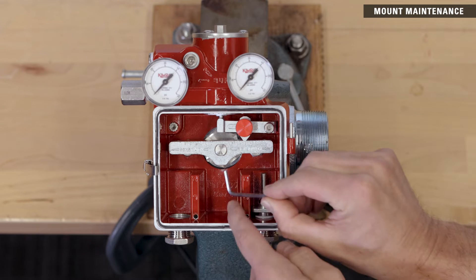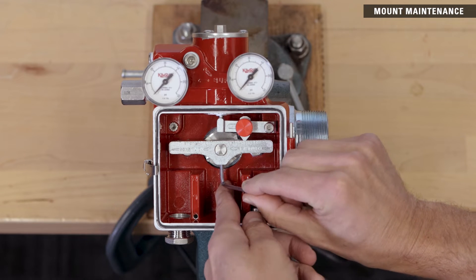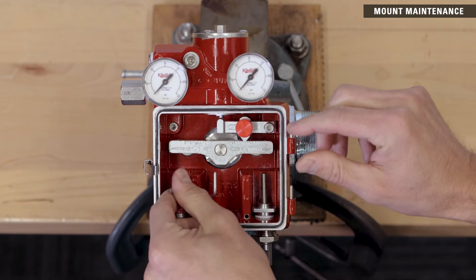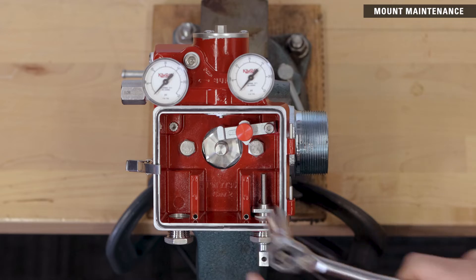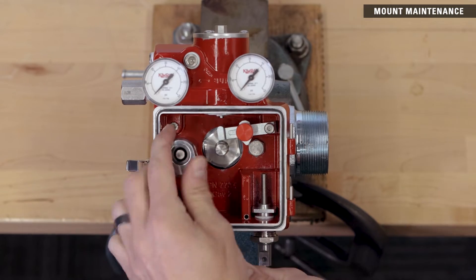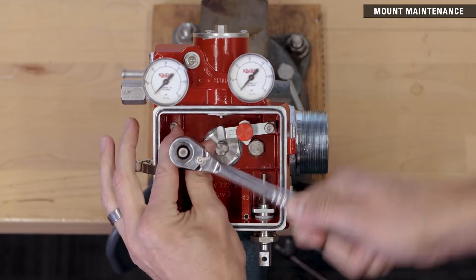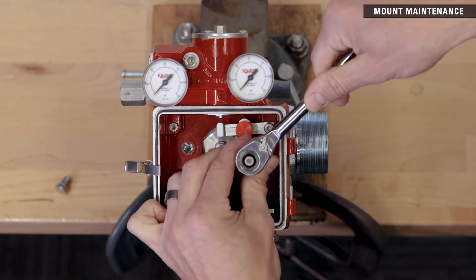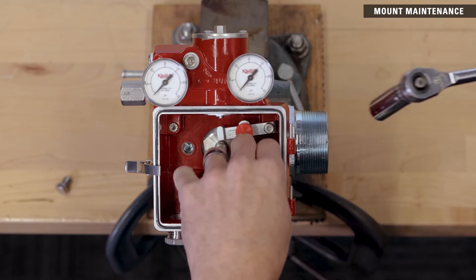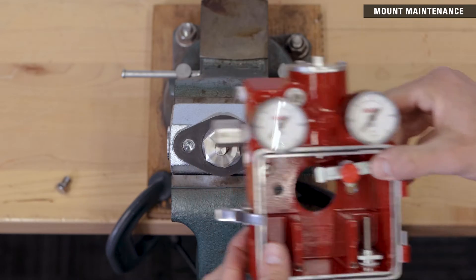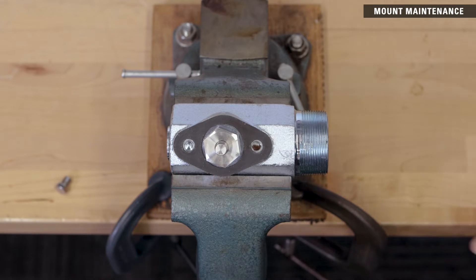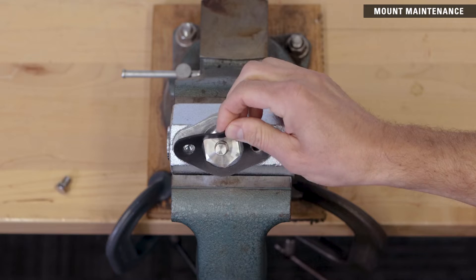Remove the torque lever by loosening the set screw on the underside using the included 1-8 inch hex key. Remove the two mount screws with the 9-16ths socket and lift the enclosure off the mount, leaving the mount in the vise. Remove and discard the mount gasket between the enclosure and the mount.